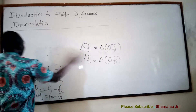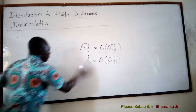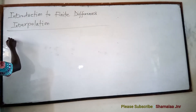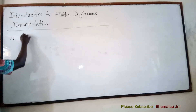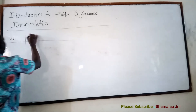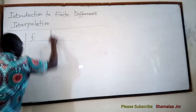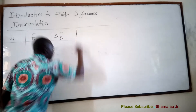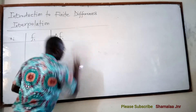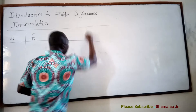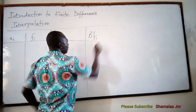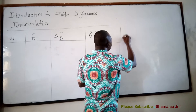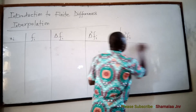Now let's look at a table to conclude this introduction to finite differences. We have a table with Xi values and Fi, the corresponding functional values. Then we can have delta Fi — the first forward differences — then delta squared Fi, the second forward differences, and delta cubed Fi, the third forward differences. This table is called a forward differences table.